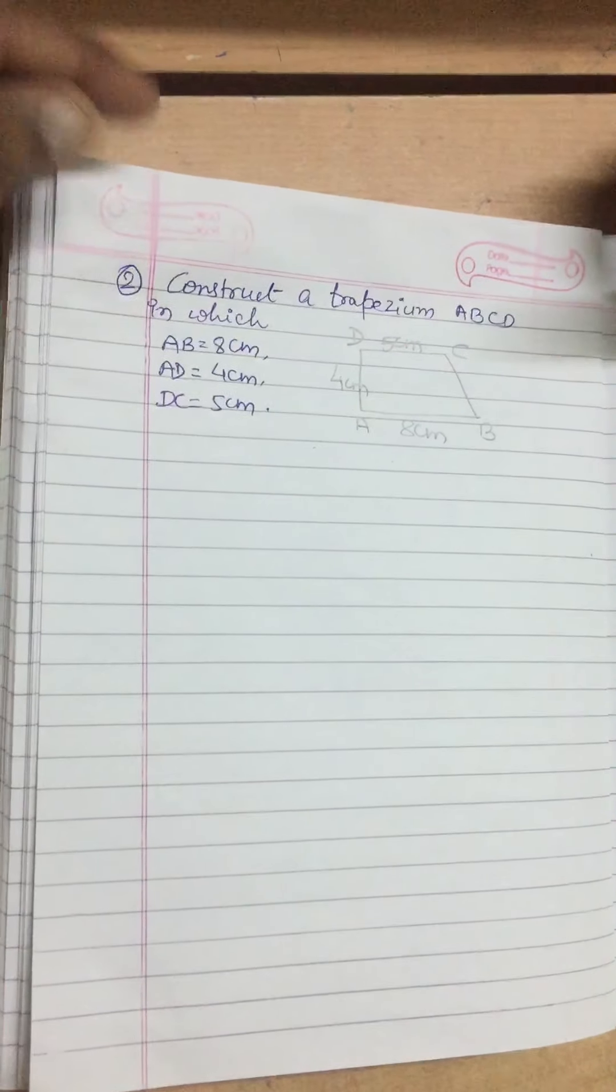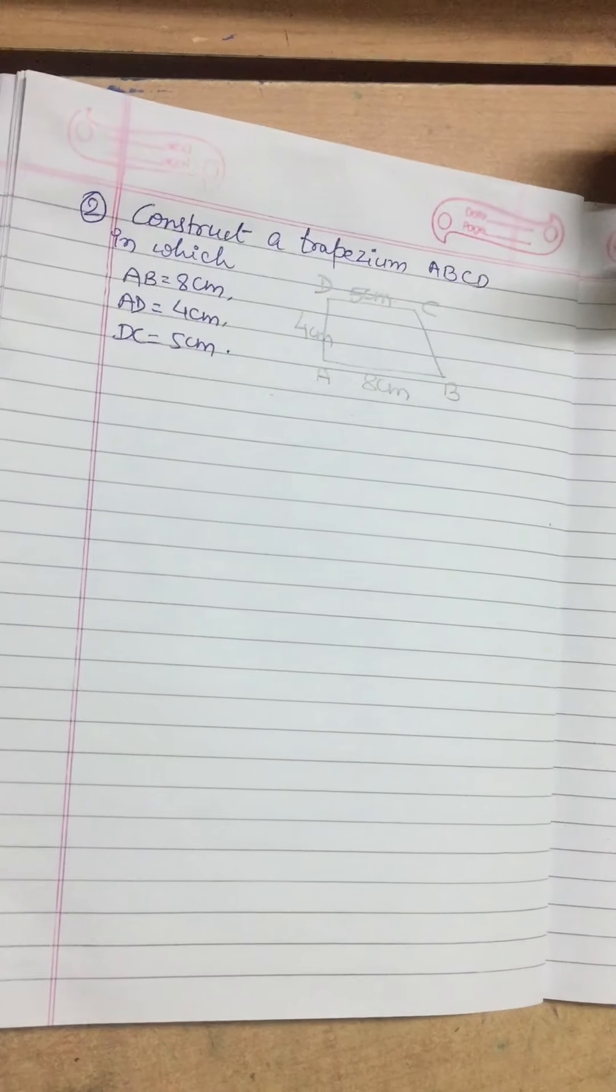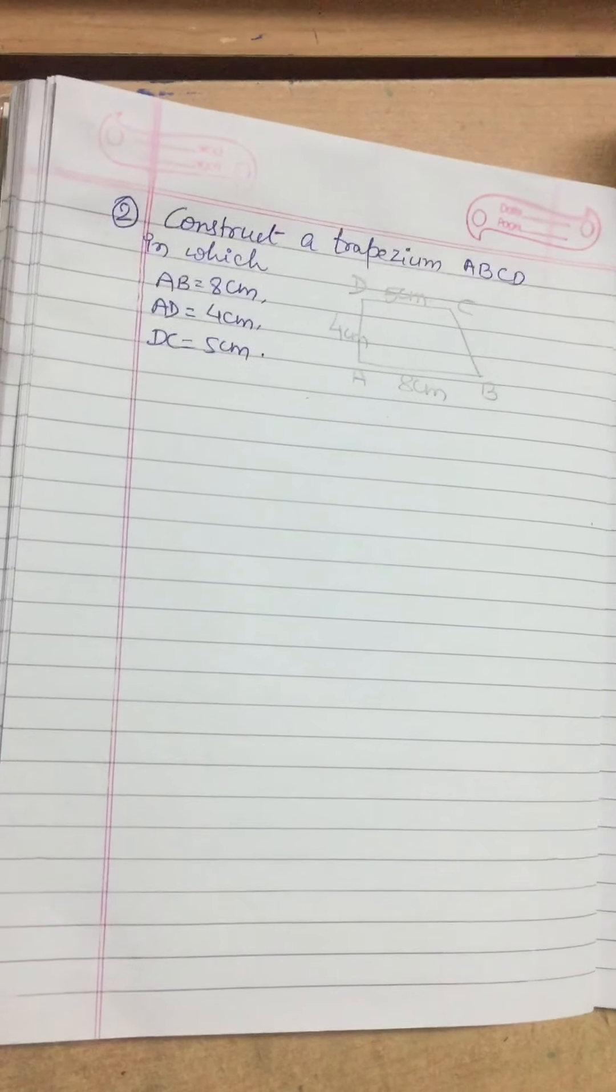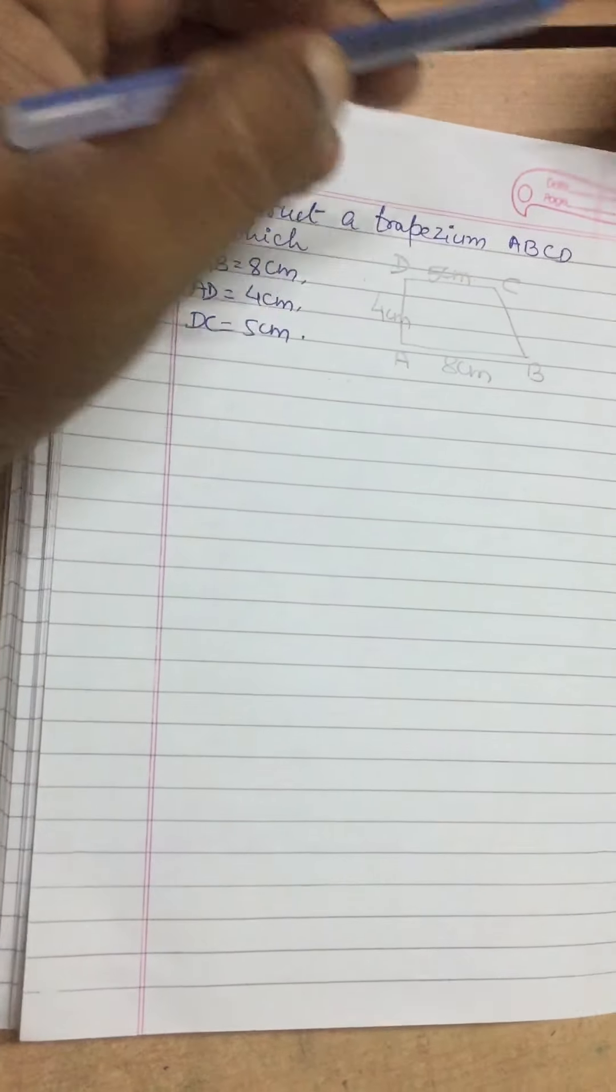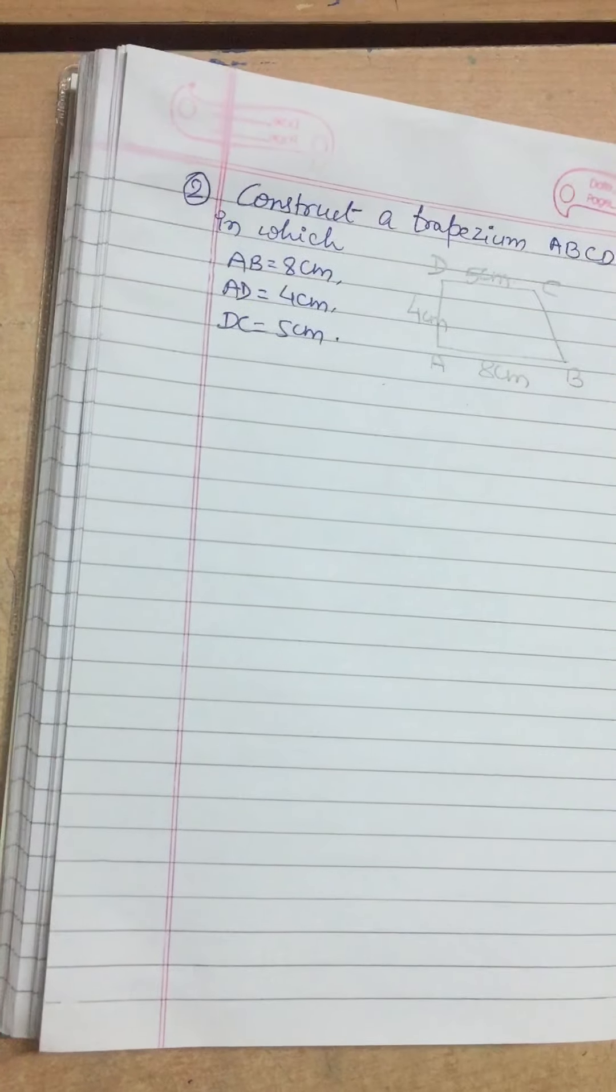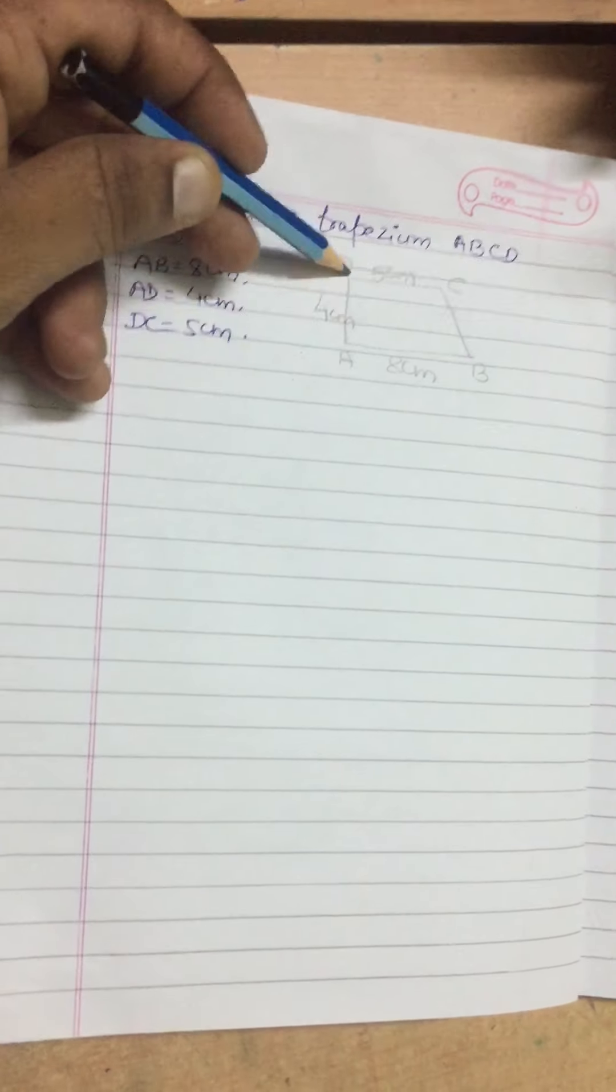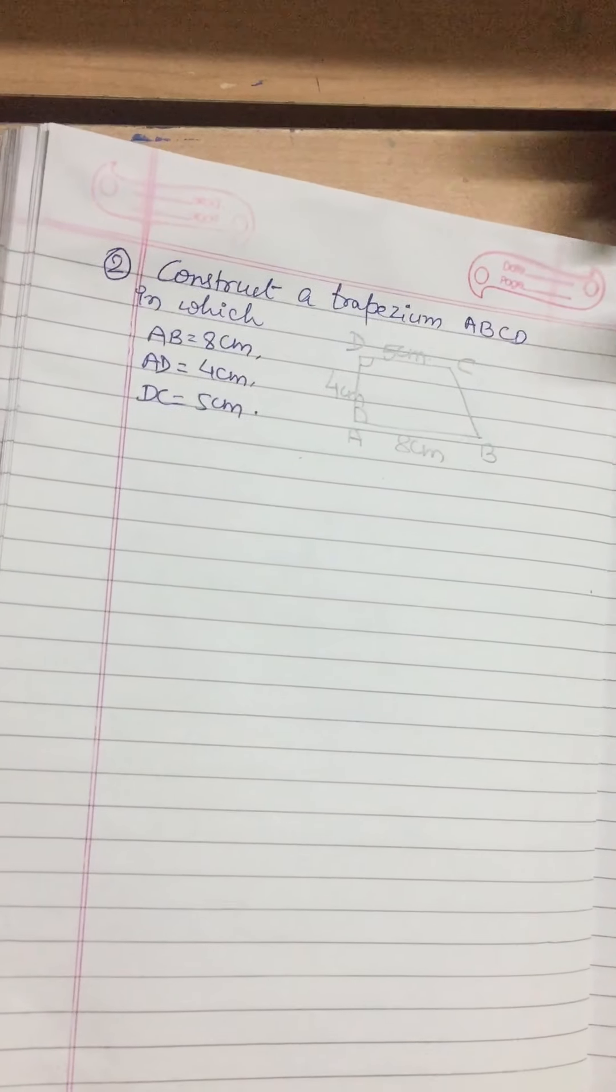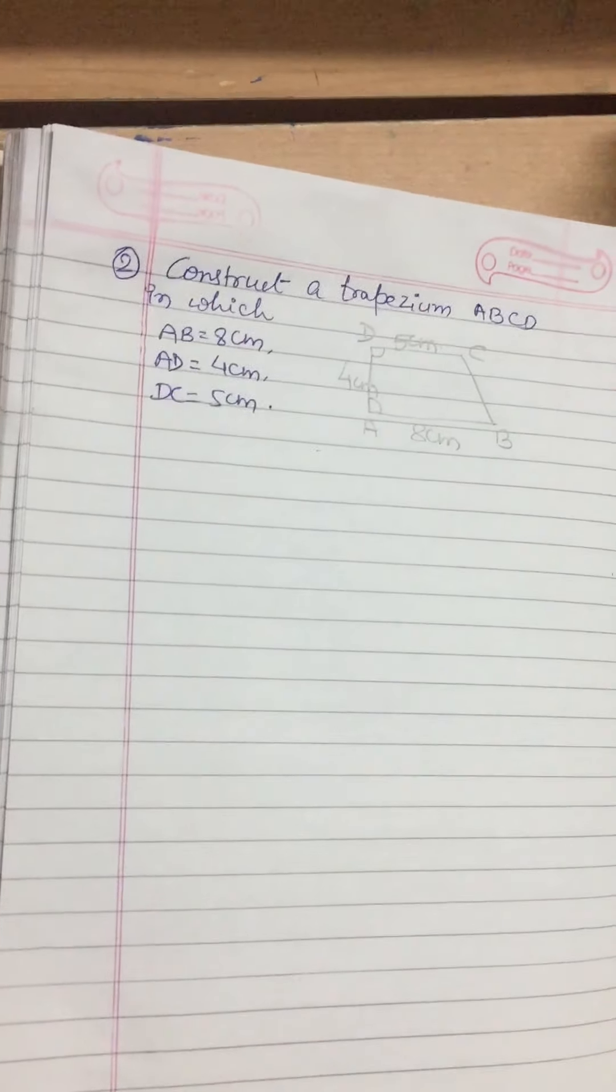Now for this construction, we will be following a property of trapezium in which we know that one pair of opposite sides are parallel. It is given that AB is parallel to DC. From that information, we can figure out that AD will work as a transversal. So angle A and angle D are co-interior angles, hence they are supplementary. So what we can do? We can go by constructing angle A and D 90-90 or 60-120.